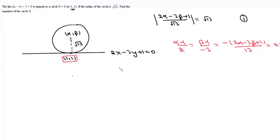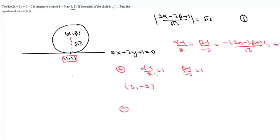Taking the positive sign: (α − 1)/2 = 1 gives α = 3, and (β − 1)/(−3) = 1 gives β = −2, so center is (3, −2). Taking the negative sign: α − 1 = −2 gives α = −1, and β = 4. So the center is either (3, −2) or (−1, 4).